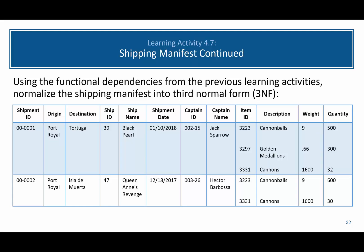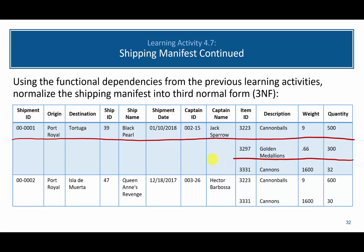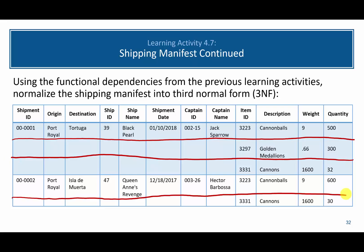Welcome back. The first thing we're going to do is convert the unnormalized form into first normal form. To do that, I'm going to split all the data into its own separate row by drawing lines indicating each row, and then fill in the missing data using ditto marks. Now that we have this in first normal form, we are ready to move to second normal form by removing the partial functional dependencies.